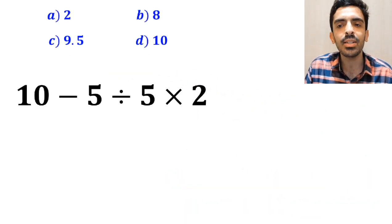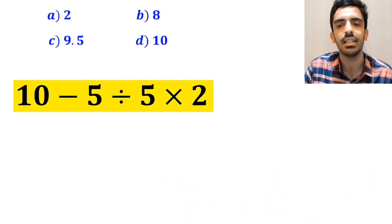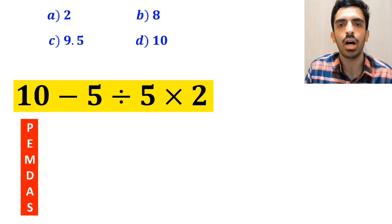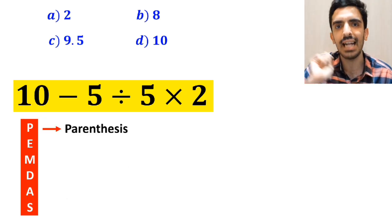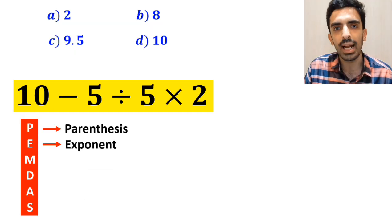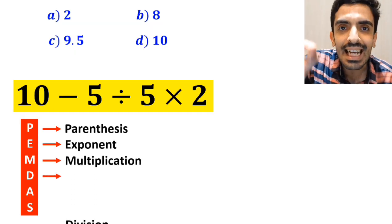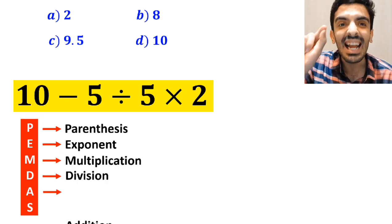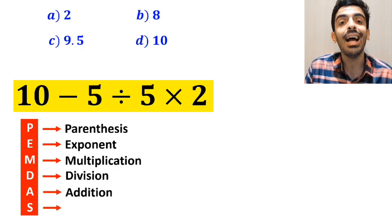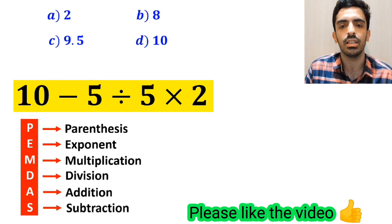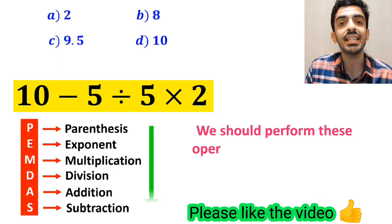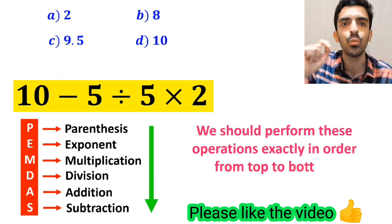Alright, now let's go step by step together, and I will show you how to solve this expression properly. To solve this problem, we must follow a rule that is called PEMDAS. And this rule, P stands for parentheses, E stands for exponent, M stands for multiplication, D stands for division, A stands for addition, and S stands for subtraction. We should perform these operations exactly in order from top to bottom.